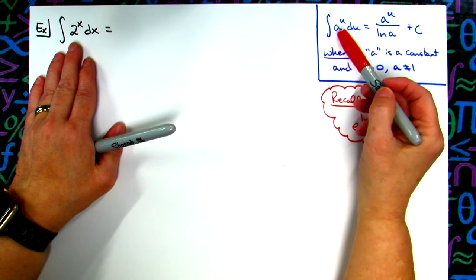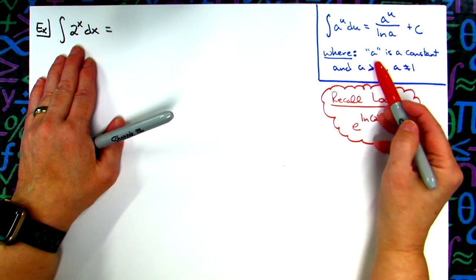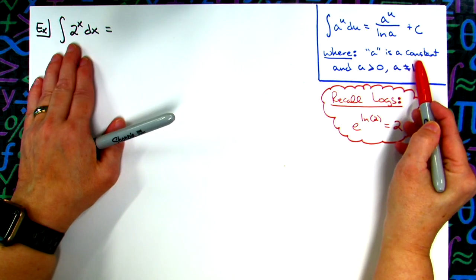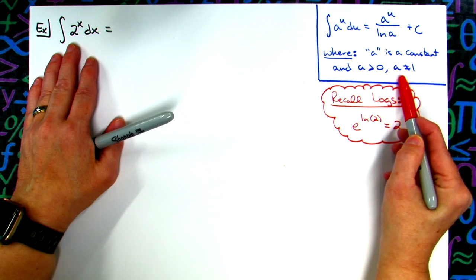This is 2 to the x, so a to the u, where u is some function of x. Conditions on our a: a has to be a constant, which it is, the base right there. A has to be greater than 0, a cannot be equal to 1, in which case we have it.